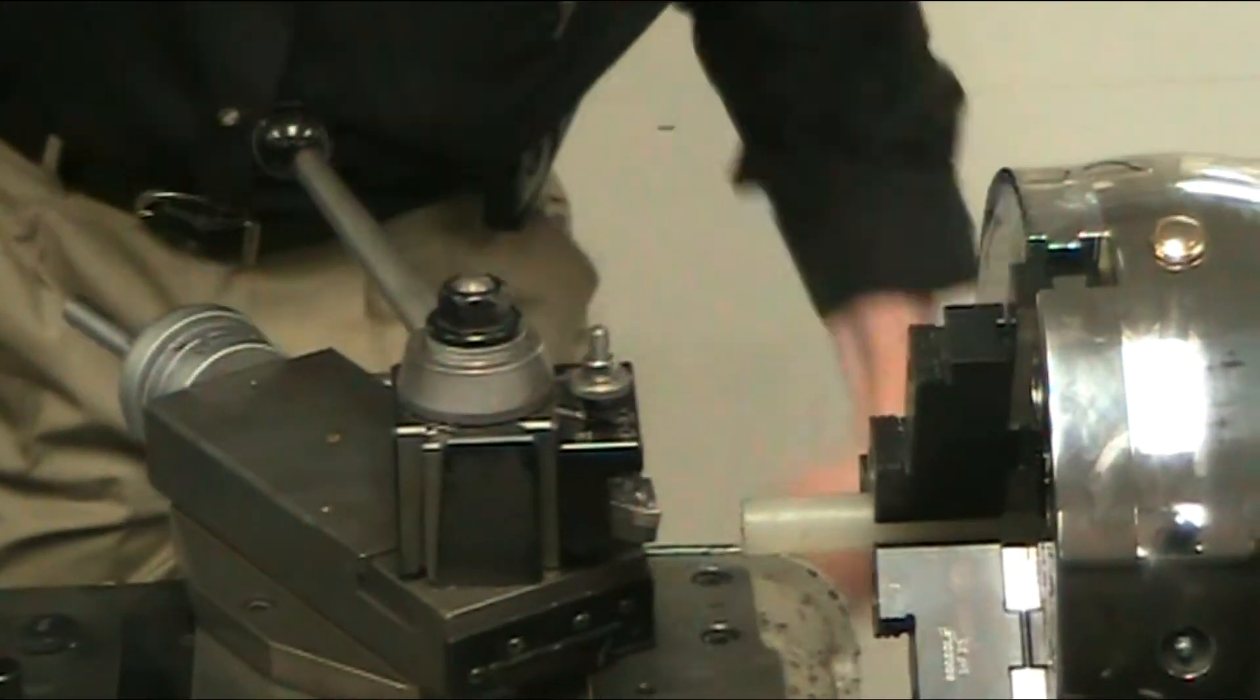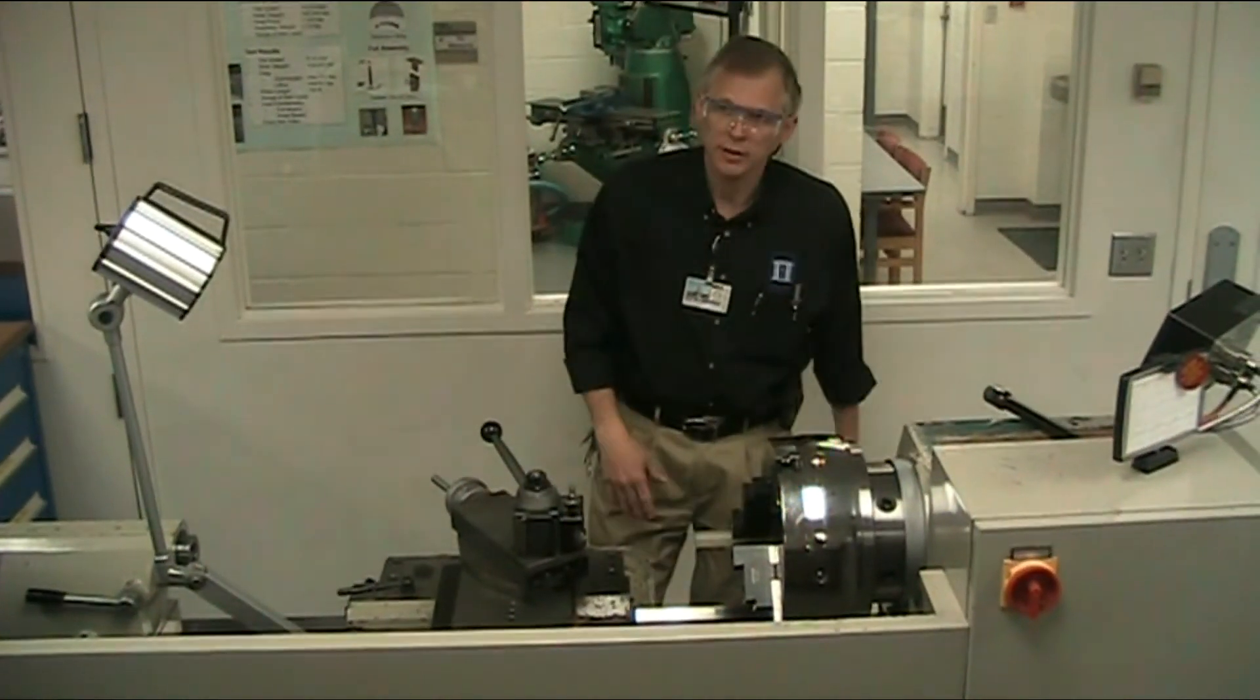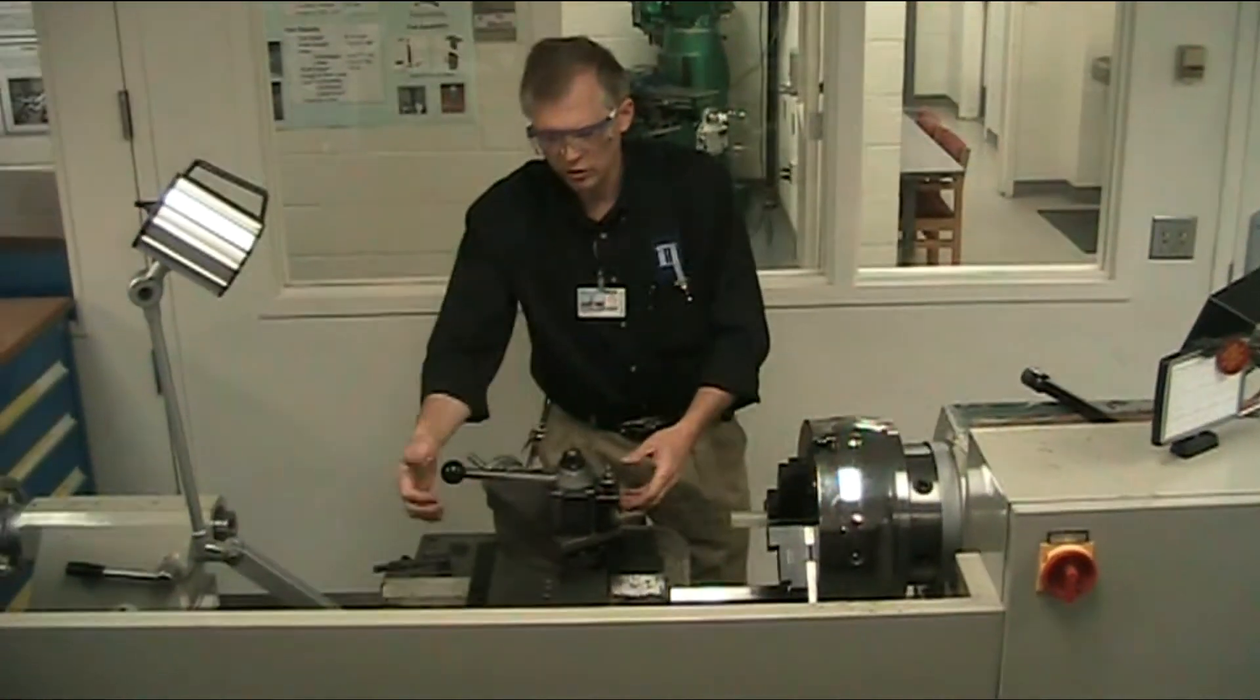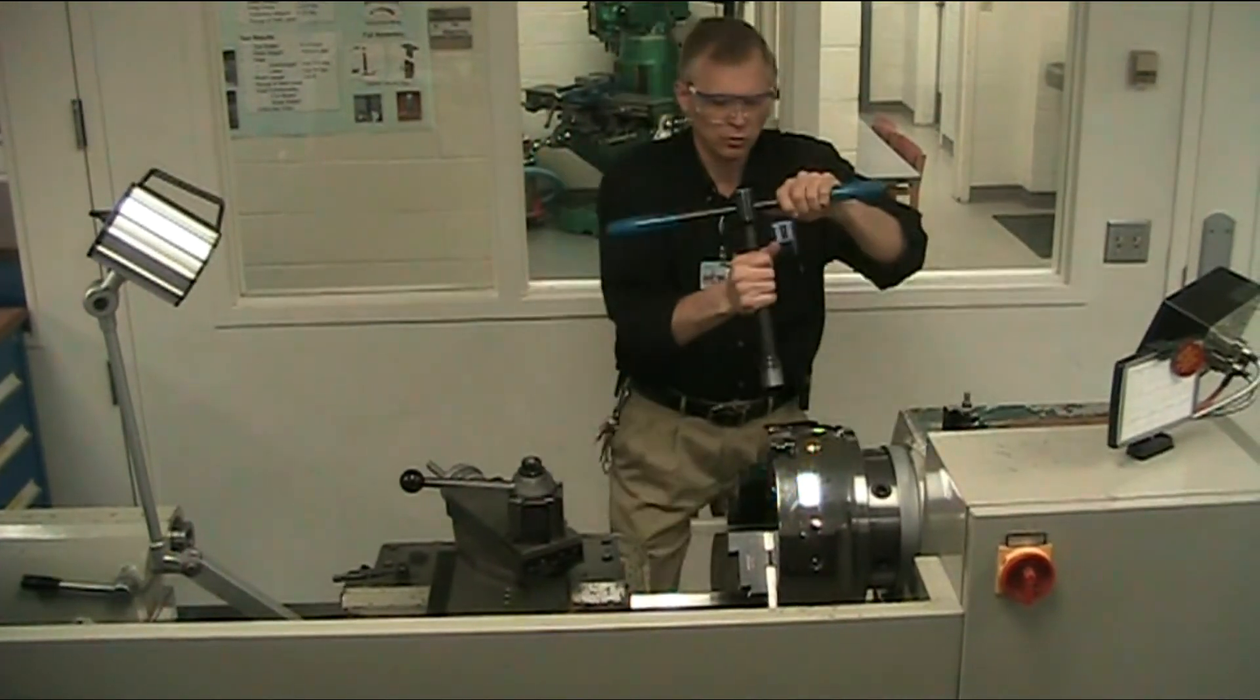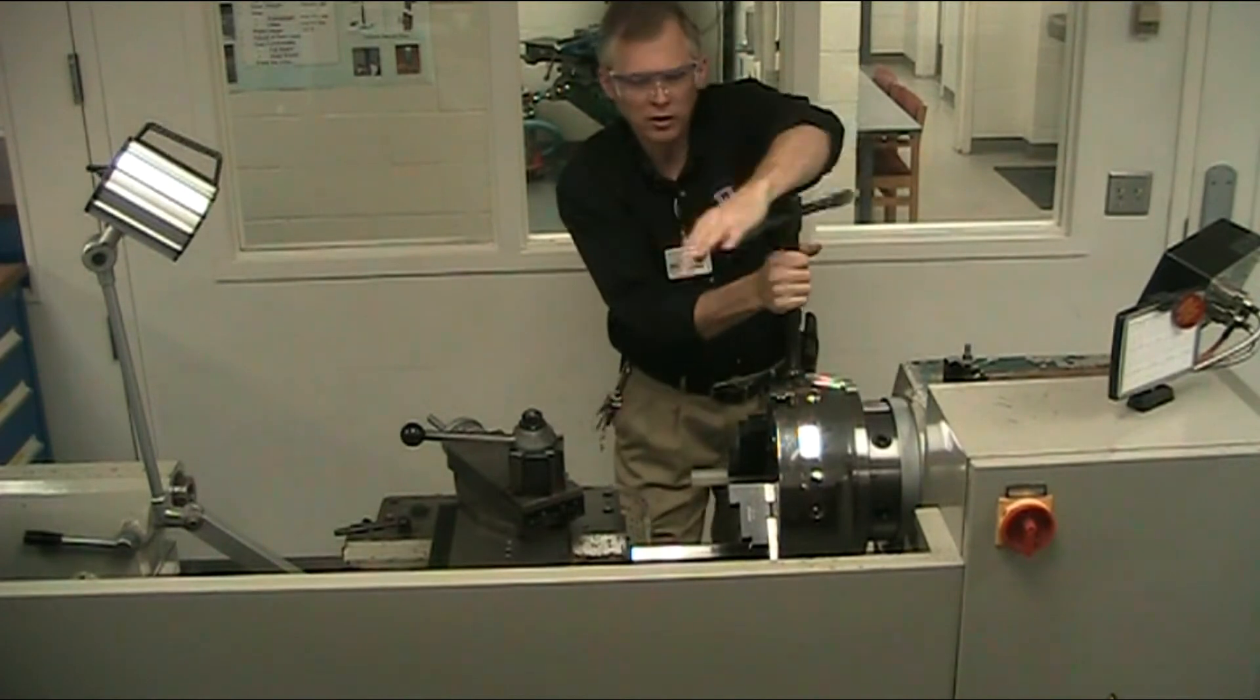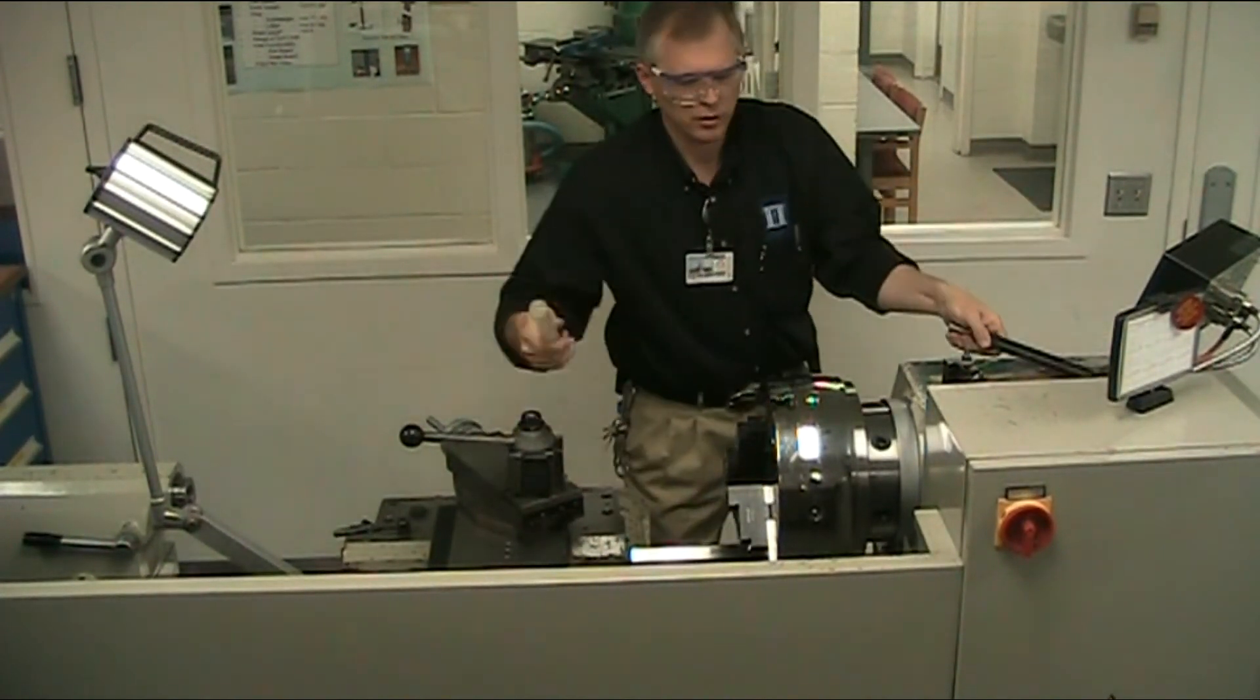And that's basically how you install a lathe tool and your material in this lathe. To take it out, you just loosen up your handle and your tool post, and you turn counterclockwise on your chuck key to take your material out of the chuck.